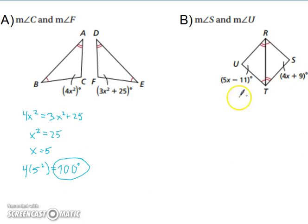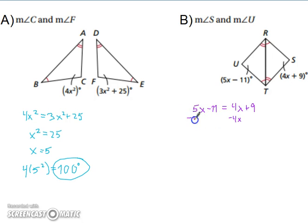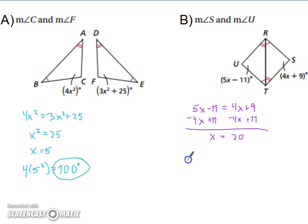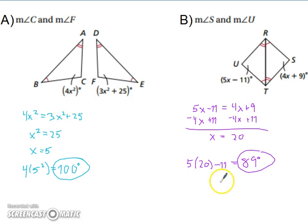For the next one, applying the third angles theorem: 5X minus 11 equals 4X plus 9. Subtract 4X from both sides, then add 11 to both sides: X equals 20. Substituting back in: 5 times 20 minus 11 gives us 89 degrees. Since both angles U and S are 89 degrees, we don't need to substitute into the other expression.